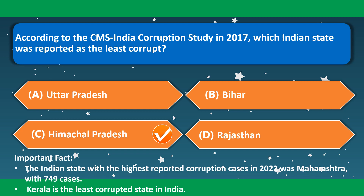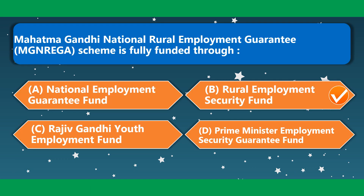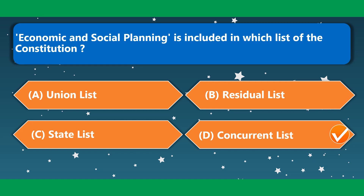According to the CMS India Corruption Study in 2017, which Indian state was reported as the least corrupt? It was Himachal Pradesh. The Indian state with the highest reported corruption cases in 2022 was Maharashtra with 749 cases. Kerala is the least corrupted state in India. Mahatma Gandhi National Rural Employment Guarantee Scheme is fully funded through the Rural Employment Security Fund. Economic and Social Planning is included in the Concurrent List of the Constitution.